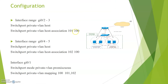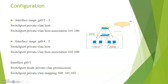Next, configure the individual switch ports. For ports connected to the community VLAN, use 'switchport mode private-vlan host', then 'switchport private-vlan host-association 100 101' — associating VLAN 101 to the primary VLAN 100. For ports connected to the isolated VLAN, use 'switchport mode private-vlan host', then 'switchport private-vlan host-association 100 102' — associating isolated VLAN 102 to primary VLAN 100.